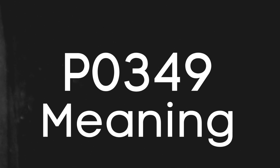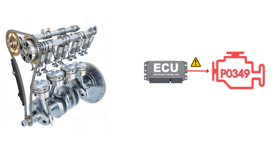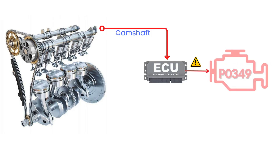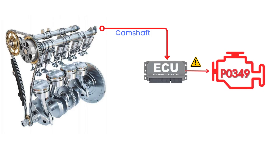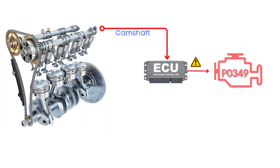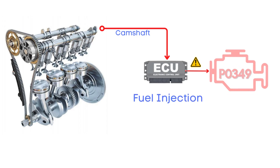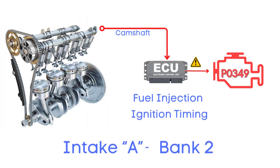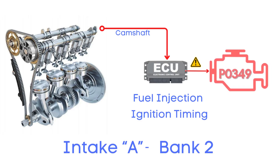The P0349 code means that the ECM detects that the signal from the Camshaft Position Sensor is lost or erratic. This sensor plays a crucial role because it helps the ECM determine the exact position of the camshaft, which is needed to manage fuel injection and ignition timing. It indicates an issue with the camshaft position circuit for Bank II, specifically referring to the intake camshaft.